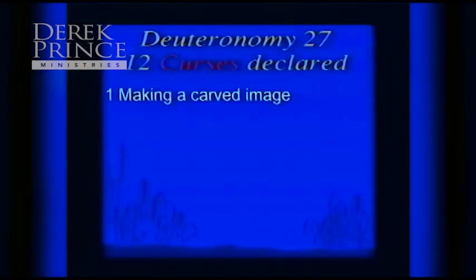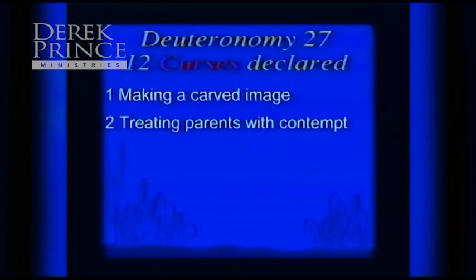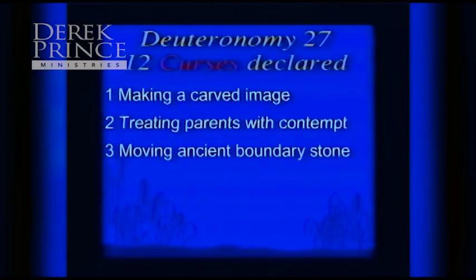It might surprise you the kinds of things that will, in God's economy, attract a generational curse. You have to ask what might cause a curse to come over your life. In Deuteronomy 27:15, there are 12 declarations the Jews were required to proclaim that bring a curse. Number one: 'Cursed is the one who makes a carved or molded image.' Verse 16, second curse: 'Cursed is the one who treats his father or mother with contempt.' Verse 17, third: 'Cursed is the one who moves the ancient or neighbor's boundary stone.'